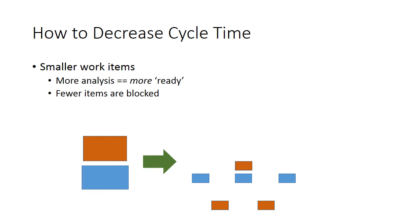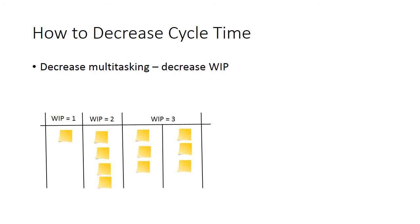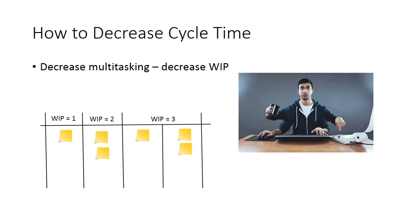We can also set work in progress limits for different development stages. Limiting the work in progress for stages causes team members to help each other when there is a problem moving work. And that's called swarming, by the way. So when the pipe is blocked, team members help one another to unblock it. With less overall work in progress, we'll have less multitasking.